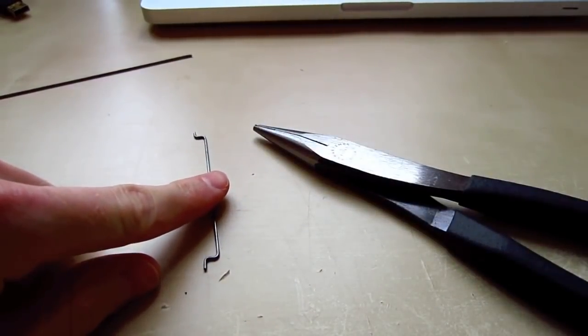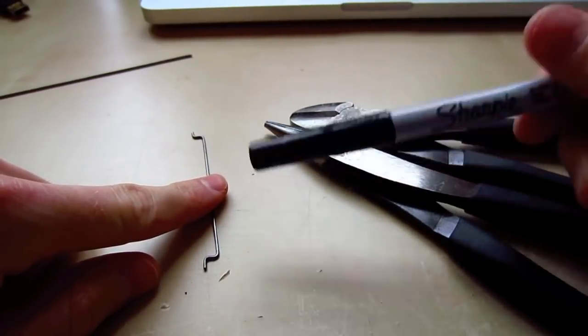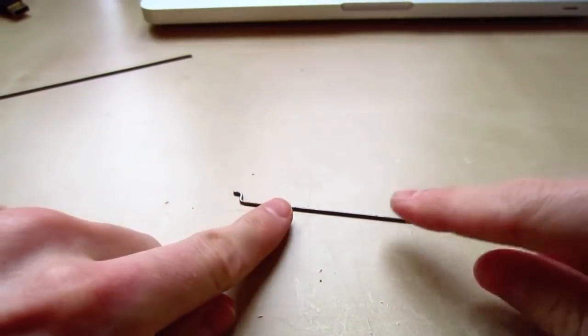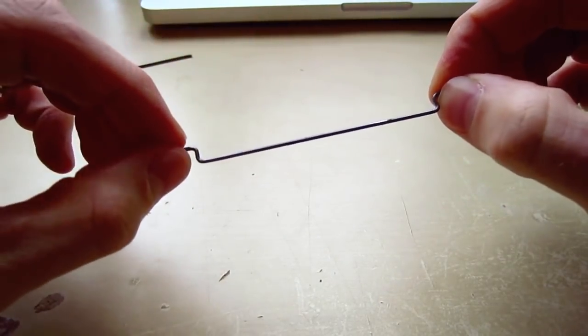And all you need is a pair of needle nose pliers, a pair of wire cutters, and then I use a marker for marking the distance. So all this is, is the wire cut to the length you need with two Z-bends in there.